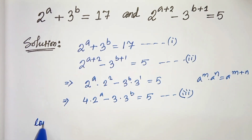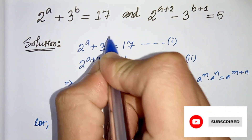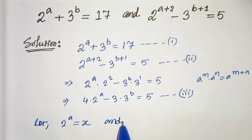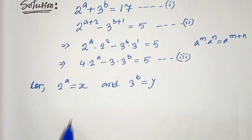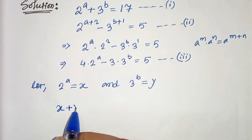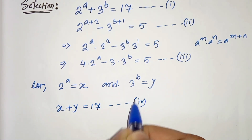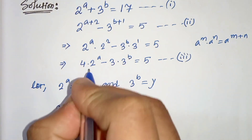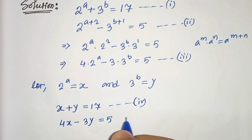Now let's take: let 2 to the power a equals to x and 3 to the power b equals to y. Now let's replace x and y in these two equations. Therefore from equation 1 we will get x plus y equals to 17. This is equation 4. And from equation 3 we will get 4x minus 3y equals to 5. This is equation 5.